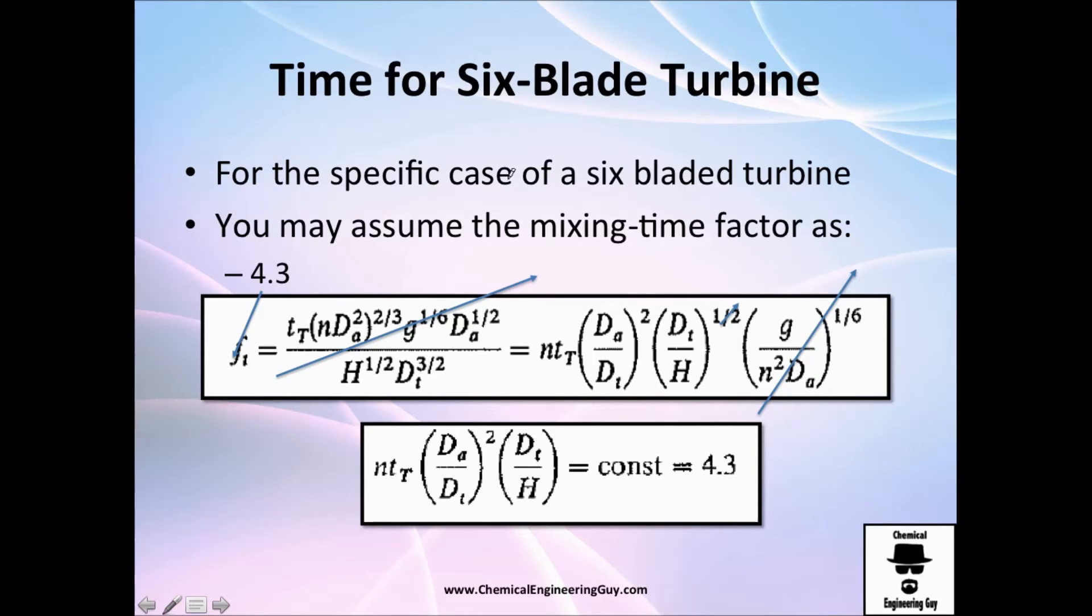So let's find out for the specific case of a six-blade turbine. You may assume the mixing time factor as 4.3, they tell you. So just by theory in this case, of course, you're going to have many tables that relate your ft value.